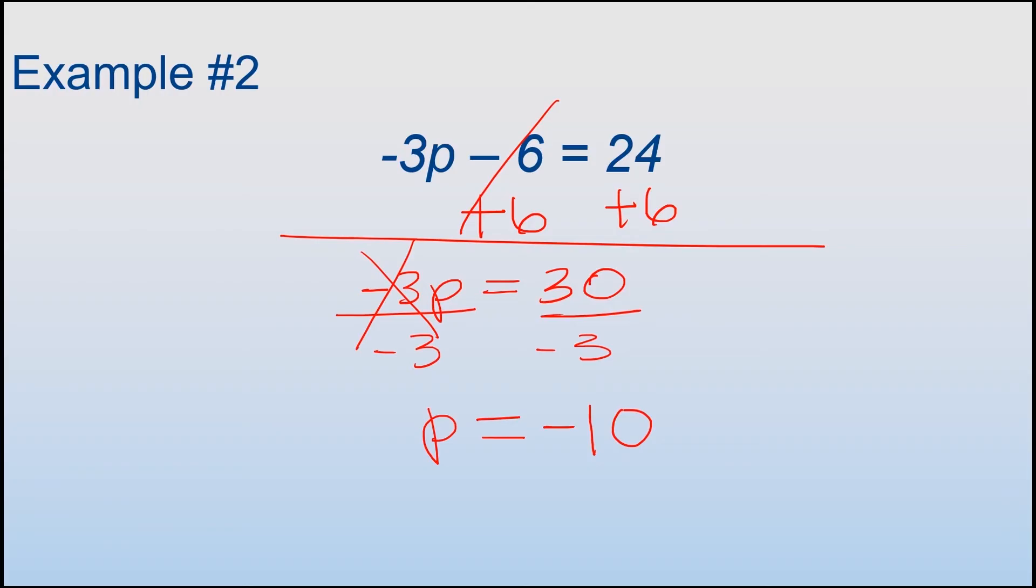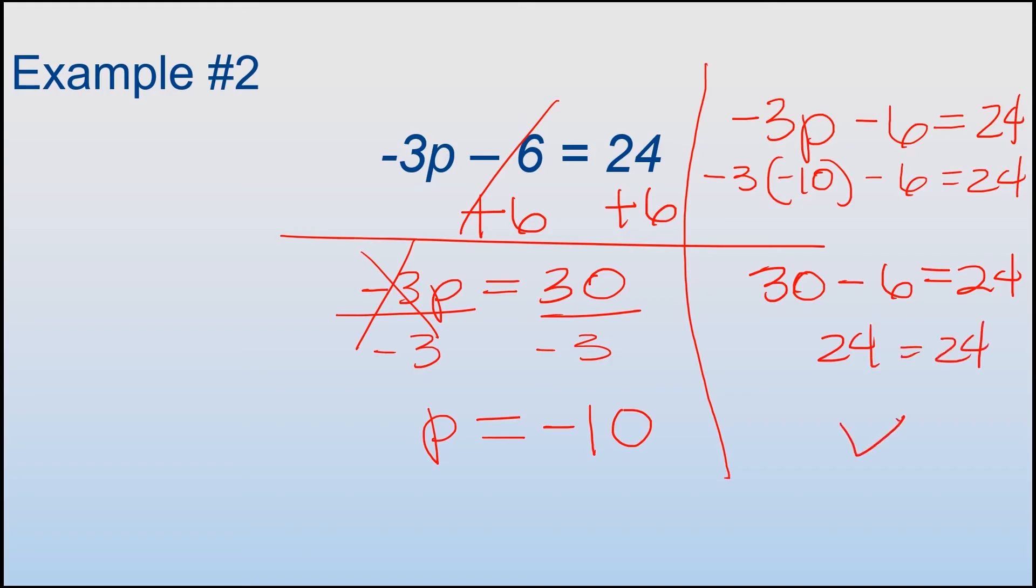Now I'm gonna plug my answer that I got in for P into the original problem. So I'm gonna start by drawing the line. I'm gonna work out my answer over here. So I have -3P - 6 = 24. I'm gonna rewrite it. Instead of writing the P, I'm gonna write my -10. -3 times -10 - 6 = 24. Now I know my rules for integers, and it says -3 times -10 is just gonna be a positive 30, subtract 6 here, and then that gives me 24. So 30 minus 6 does equal 24, so that means I did solve this problem correctly.